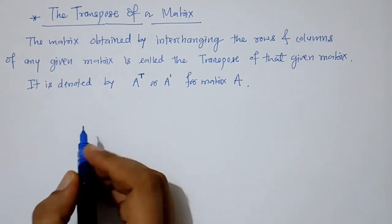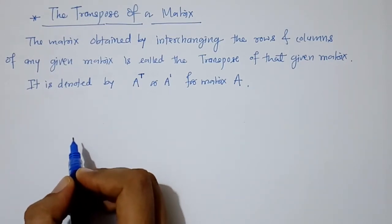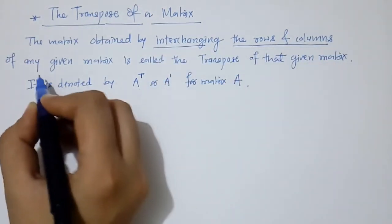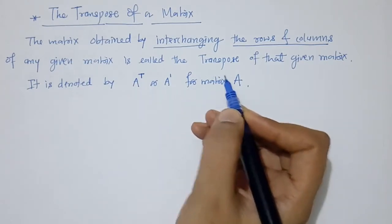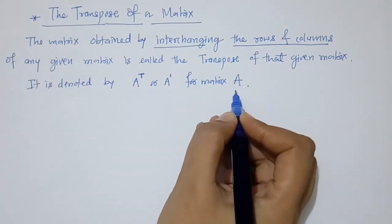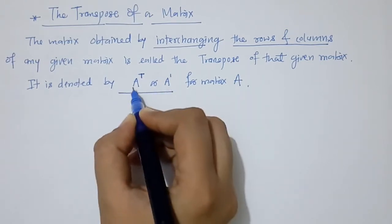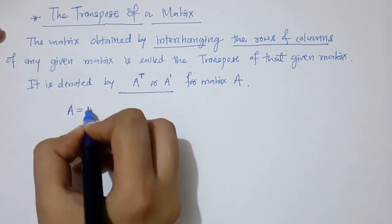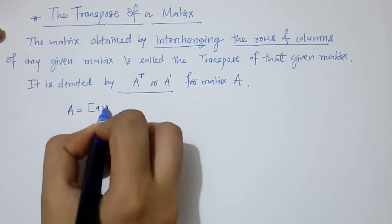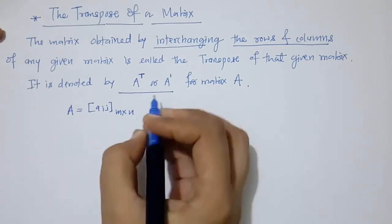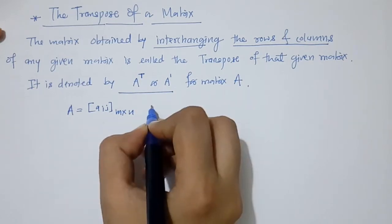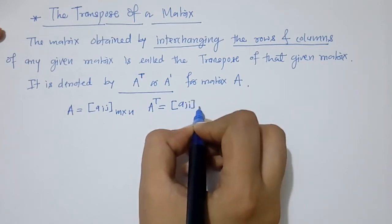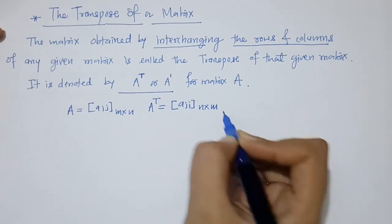Hello everyone, today we are going to see the transpose of a matrix. The matrix obtained by interchanging the rows and columns of any given matrix is the transpose of that matrix. If we have a given matrix A, its transpose is denoted by A transpose or A dash. If matrix A is of order m by n, then its transpose is given by A_ji of order n by m.